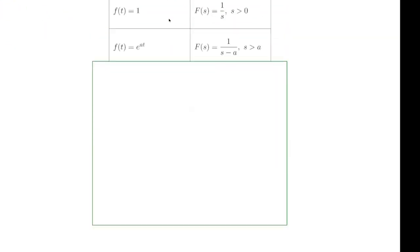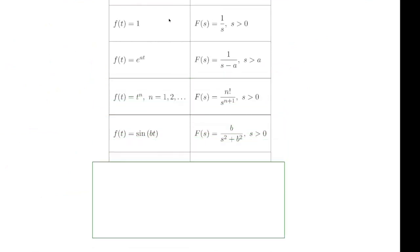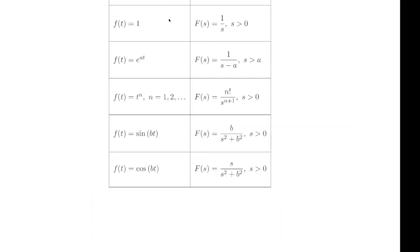Coming back to our table. Here's the cosine result. The sine goes very similarly. With cosine we have the variable S on top; when we take the Laplace transform of sine, we get the constant B up top. You are welcome to use all of these shortcuts without justifying anything unless the problem asks you to derive it from the definition of the Laplace transform.